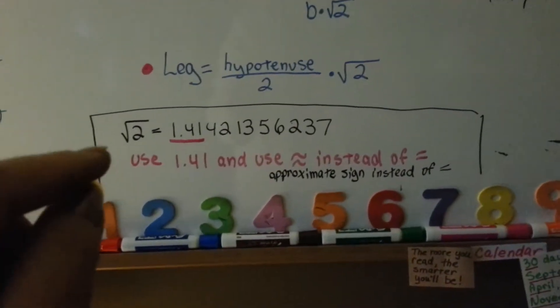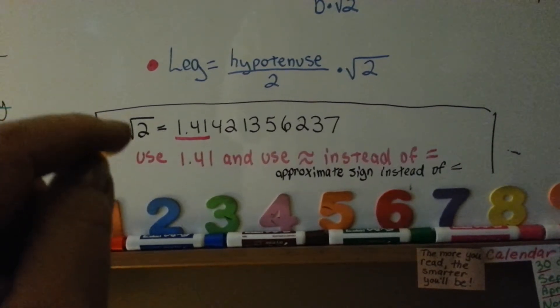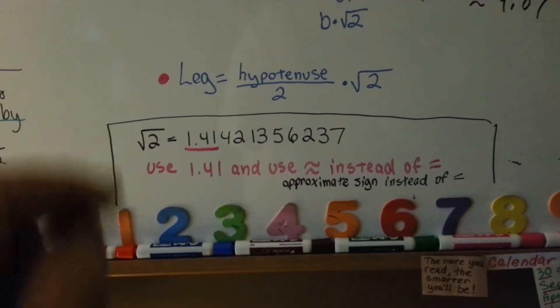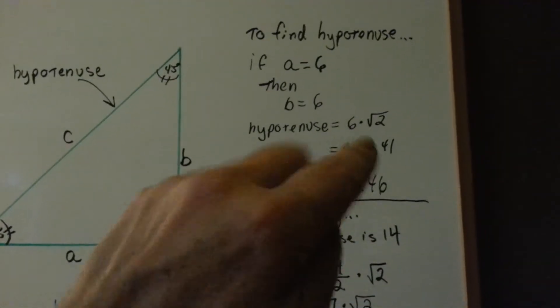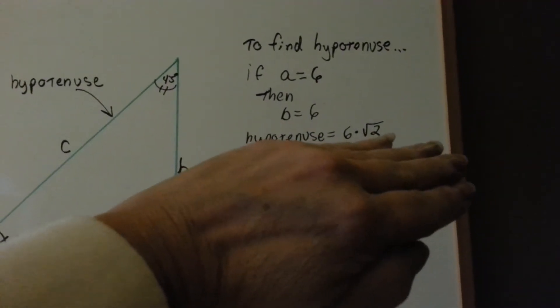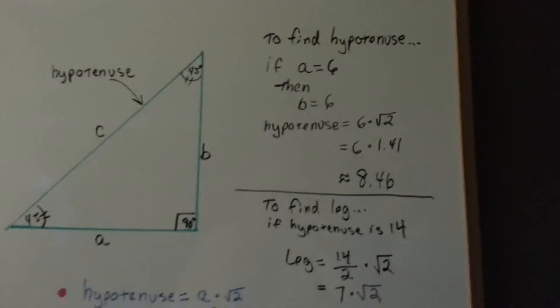Now, sometimes, teachers say, I want you to answer the problem, but leave it as the square root. Don't go into detail. You can do that too. Sometimes, when you're doing it, the teacher will say, just leave it 6 square root of 2. You go, okay, that's less work for me. That's fine.